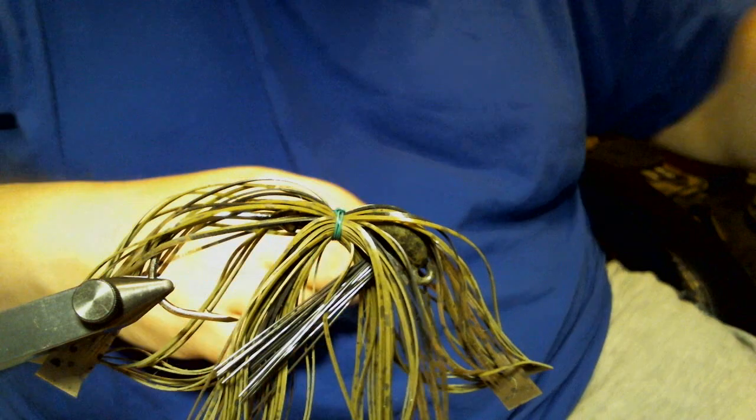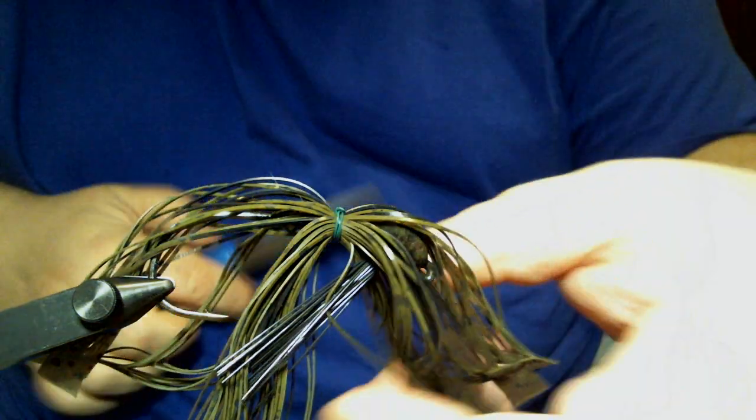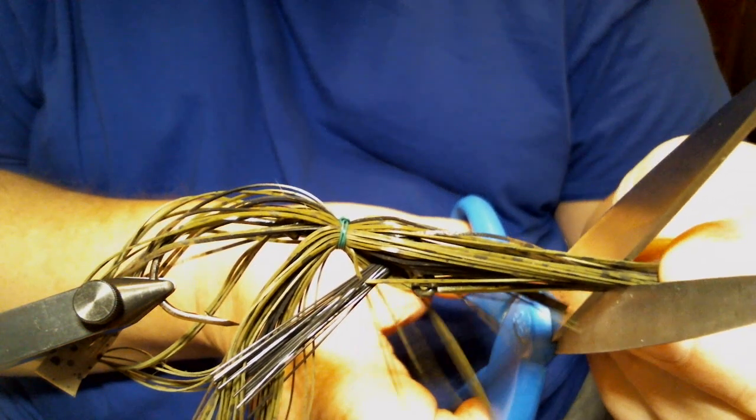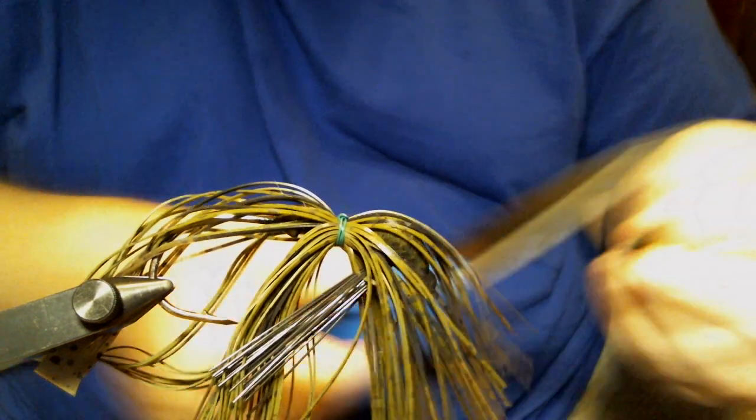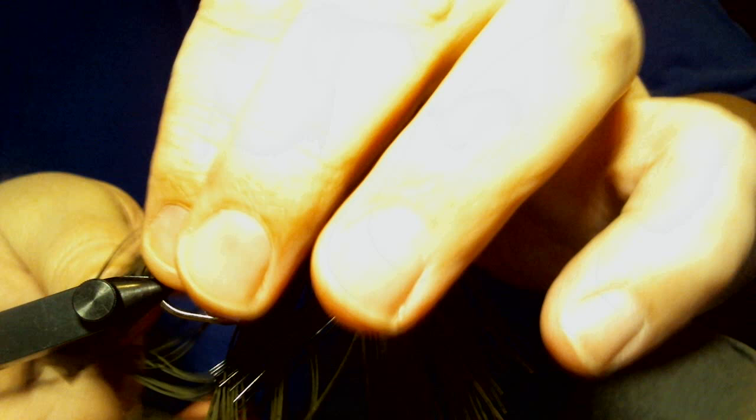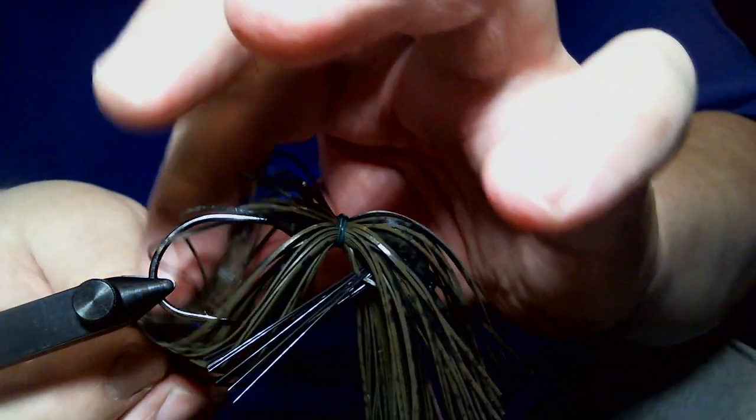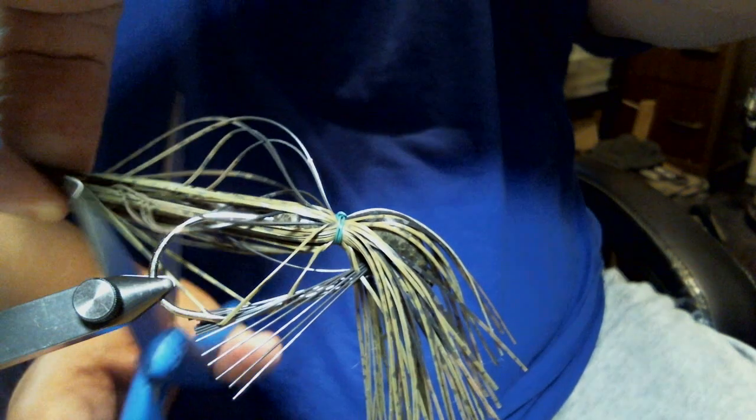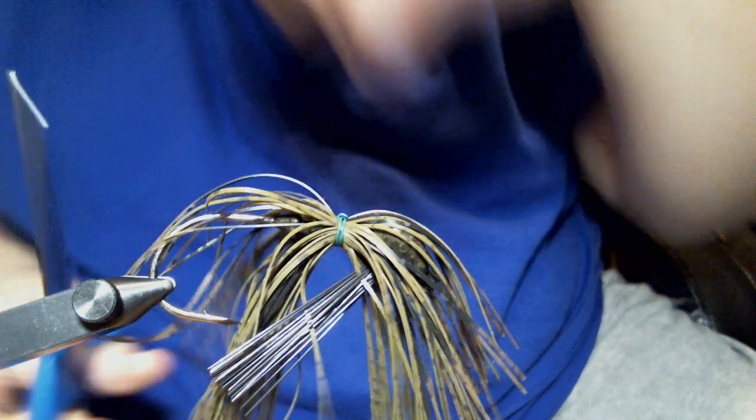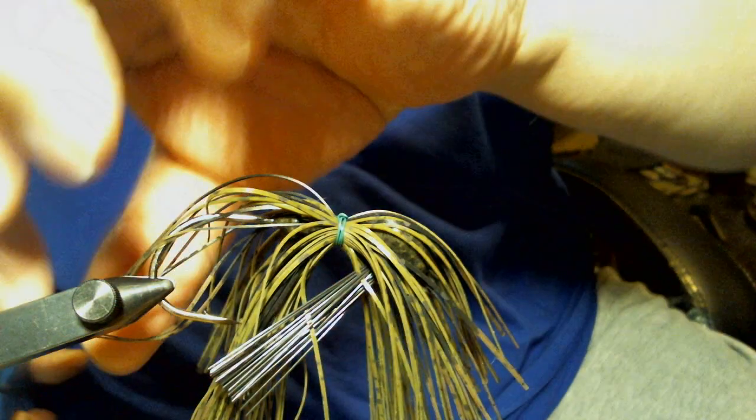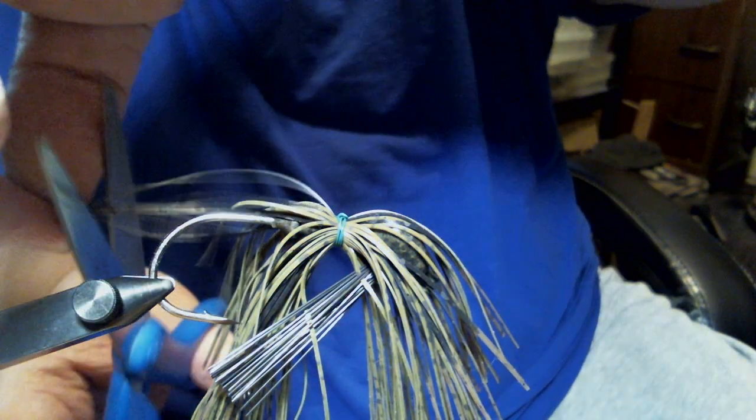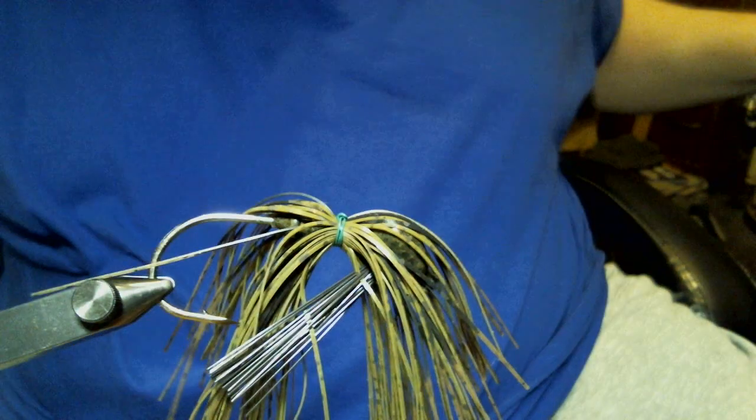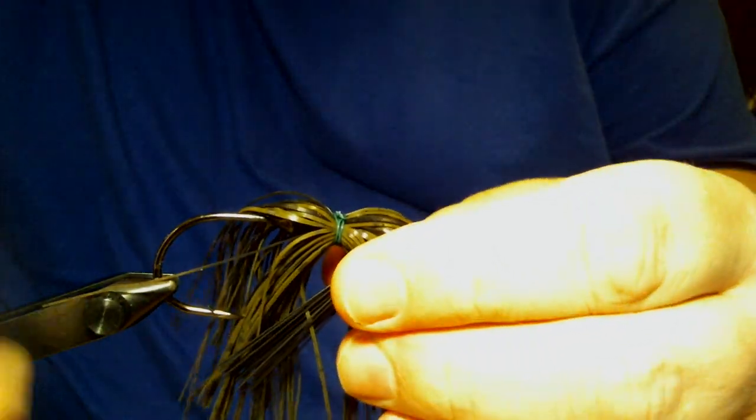And then it's just a simple thing of taking my scissors, trimming my skirt material, just make sure I got it all, and I missed a little bit. And that's all there is to it that's a wire tied jig.